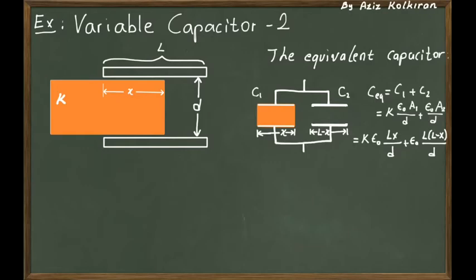So, the new capacitance will be the sum of these capacitors, and we can now easily express the capacitances. The first one, since it has a dielectric K, will be K epsilon 0 times A1, which is the surface area of the plate of capacitor C1, divided by D.